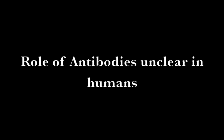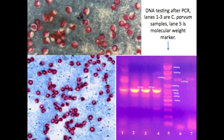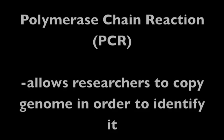The role of antibodies in immunity to Cryptosporidium parvum is unclear in humans. The main method of diagnosis is the identification of oocysts after fecal flotation in sucrose or zinc sulfate. The oocysts in the fecal smear will appear red after acid-fast staining. If the fecal flotation method is not sufficient, genetic methods of identification using the polymerase chain reaction can be done. PCR allows researchers to make thousands of copies of the microbe genome in order to identify it.